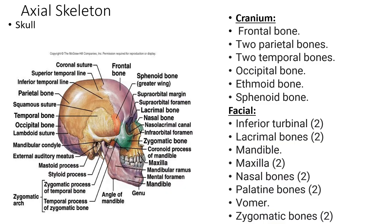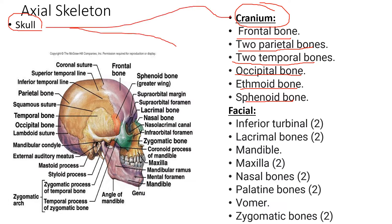The cranium has a frontal bone, two parietal bones, two temporal bones, an occipital bone, an ethmoid bone, and the keystone — the sphenoid bone. The skull is broken up into the cranium and the facial bones — 14 facial bones. We have two inferior turbinate bones, two lacrimal bones, one mandible, two maxillae that fuse, two nasal bones, two palatine bones, a vomer, and two zygomatic bones.